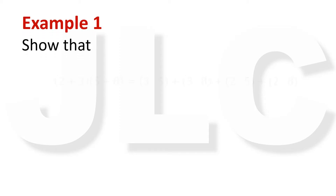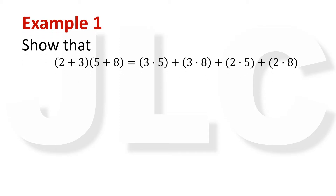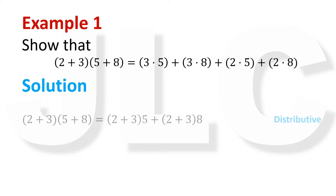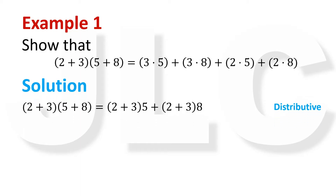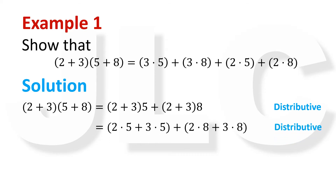Example 1: Show that the sum of 2 and 3 times the sum of 5 and 8 is equal to the sum of 3 times 5, 3 times 8, 2 times 5, and 2 times 8. By the distributive property, the left-hand side is equal to the sum of 2 and 3 times 5 plus the sum of 2 and 3 times 8. By distributive property, this becomes the sum of 2 times 5 and 3 times 5, plus the sum of 2 times 8 and 3 times 8.